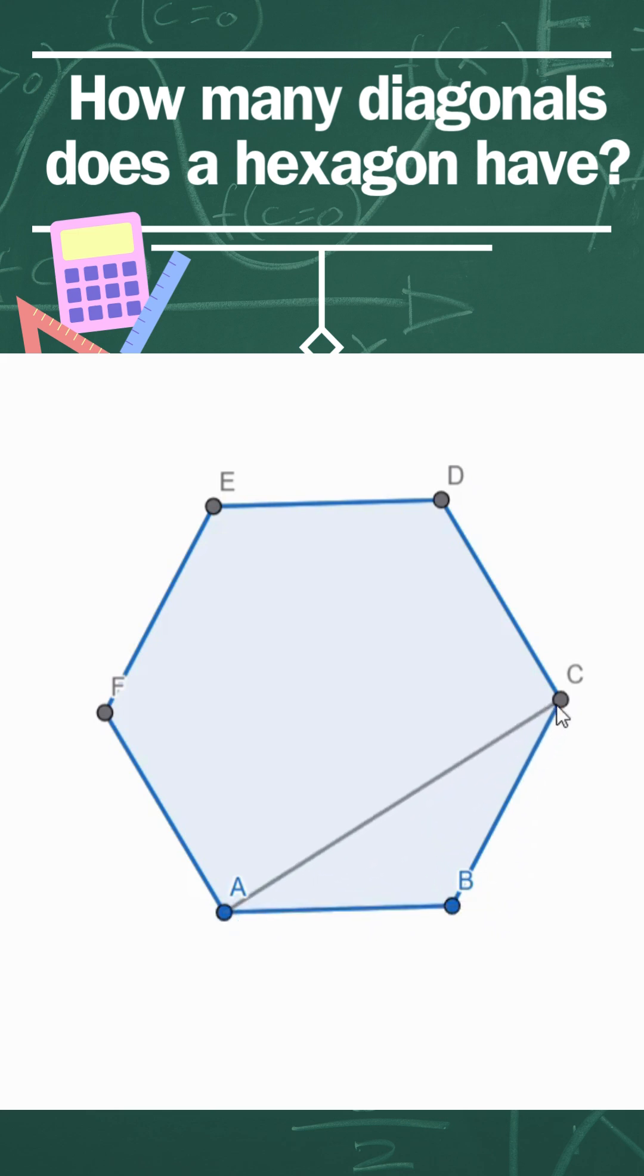Starting at vertex A. A to C skips a vertex, so it's a diagonal. A to D is a diagonal too. A to E, also a diagonal. A to F is an edge again, so no.